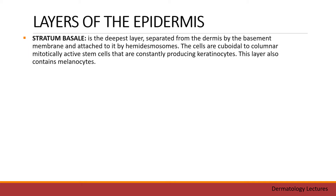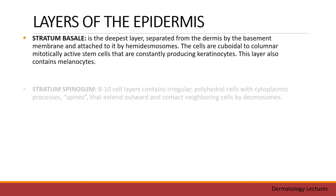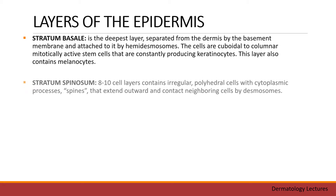Stratum basale is the deepest layer, separated from the dermis by the basement membrane and attached to it by hemidesmosomes. The cells are cuboidal to columnar, mitotically active stem cells that are constantly producing keratinocytes. This layer also contains melanocytes.